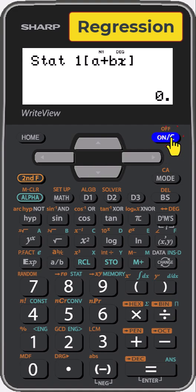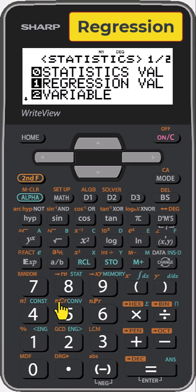Press ONC to clear. Press ALPHA8 again for stats. This time select regression by pressing 1.